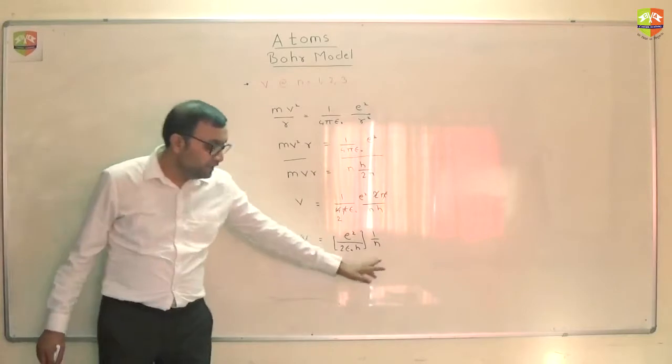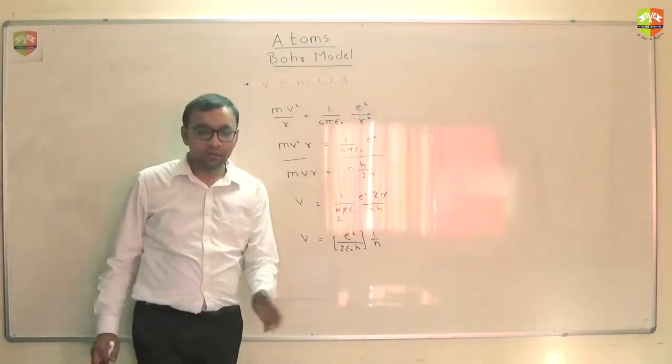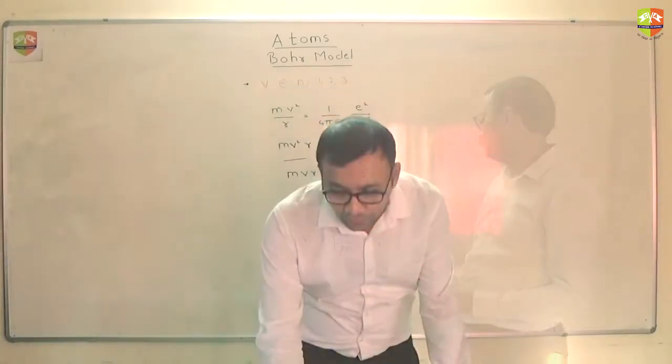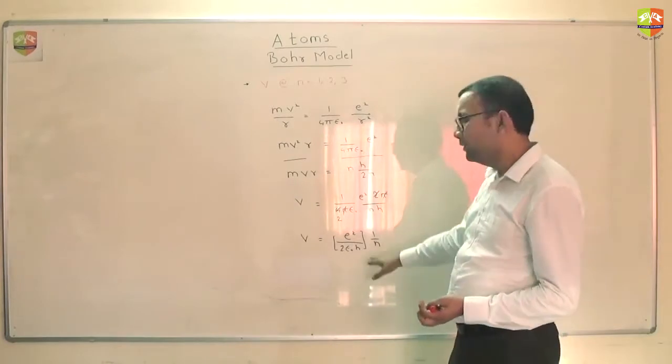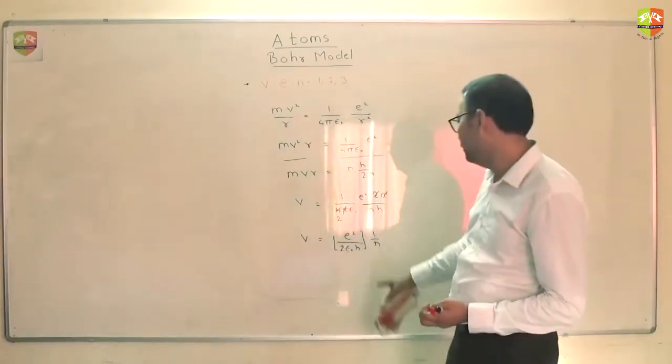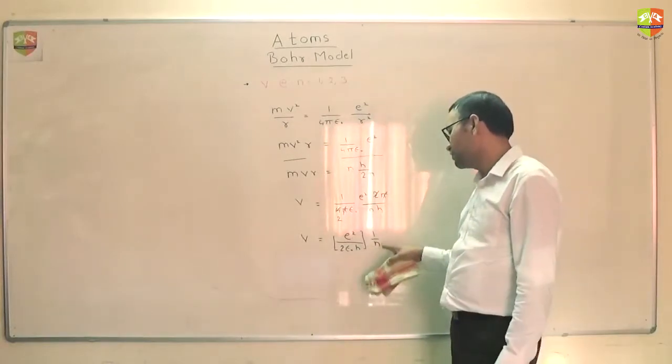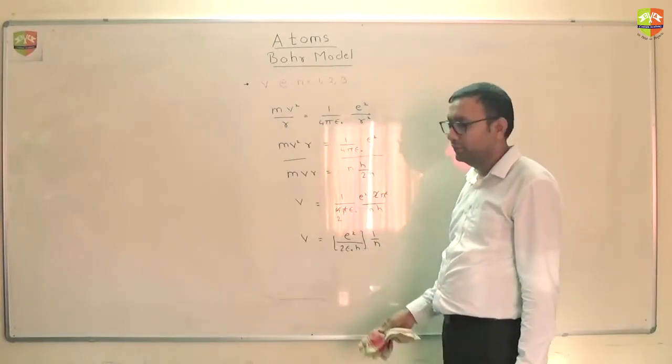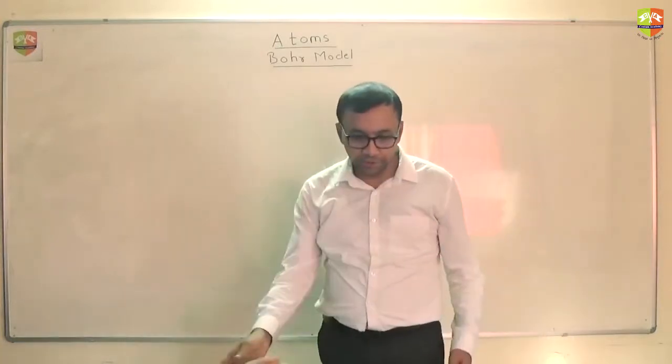So as n increases, velocity will go down. Now you will be able to get right. From here, it's okay. You can put the value of e, epsilon naught, h, you will get the value of v for different angles. Right now, next question.